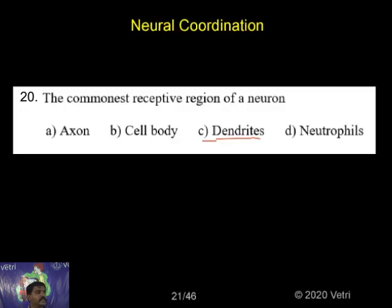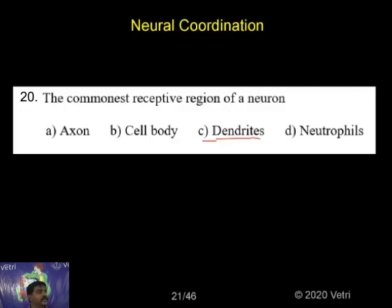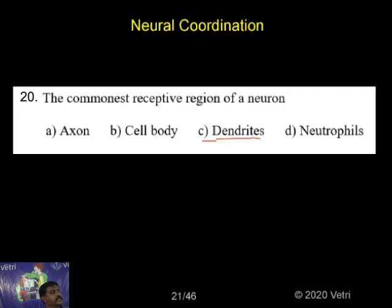Now, WBC — White Blood Cells. The presence of Granulocyte and A-Granulocyte, depending upon the five types: Basophil, Neutrophil, Lymphocyte, Monocyte. So, the Neutrophil comes from the Blood Cell.